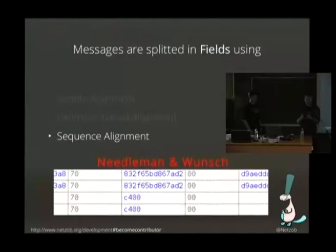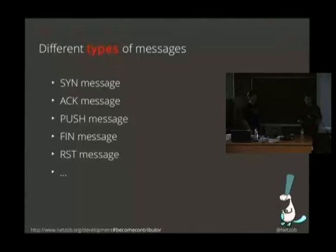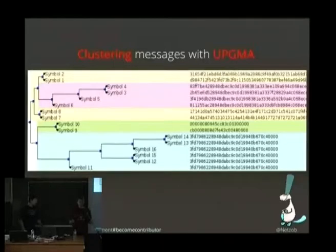The next step is to regroup similar messages in specific groups. If we take the example of TCP, you have many types of messages that are defined by their flag, and we want to be able to automatically retrieve the different groups or different kinds of messages or commands. So we use a clustering approach, and in the clustering field we use a UPGMA algorithm which is taken from the bioinformatics domain, and we use a similarity function to compare messages. With a clustering algorithm we are able to make a group of similar messages.